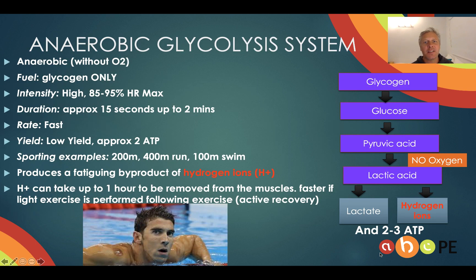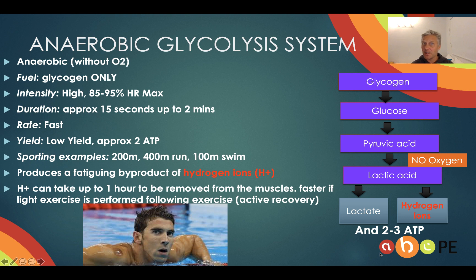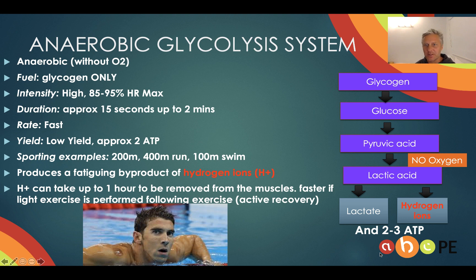The second anaerobic system is the anaerobic glycolysis system. It doesn't require oxygen. We switch fuels now — glycogen is the fuel, and glycogen is stored carbohydrate. The body takes in carbohydrate, digests it down to glucose, transports it in the bloodstream, and then stores it as glycogen in the muscle. This system only uses glycogen. You can see the chemical reaction is quite a bit more complex — there are more steps: glycogen to glucose, to pyruvic acid. And since there's no oxygen — remembering this is an anaerobic system — we produce lactic acid, which breaks down to hydrogen ions and lactate, and we get two to three ATP from that process.